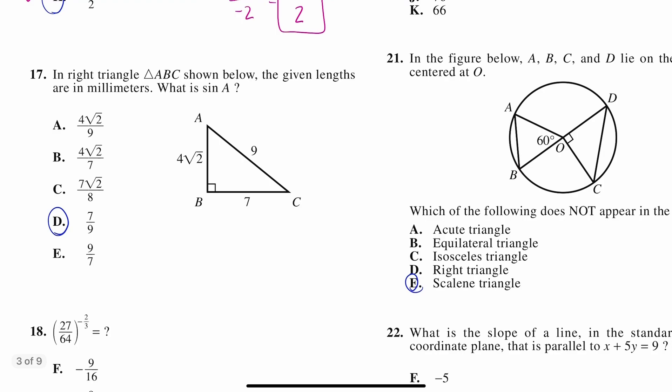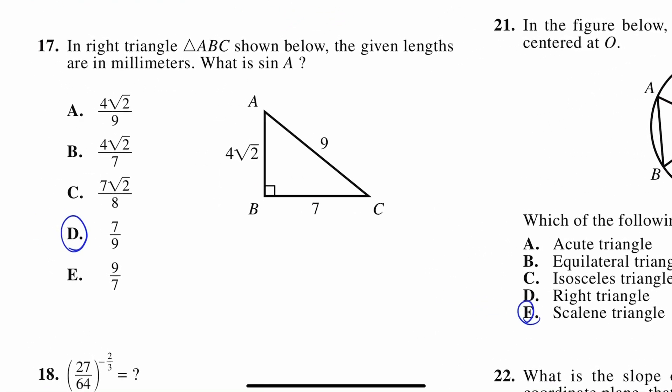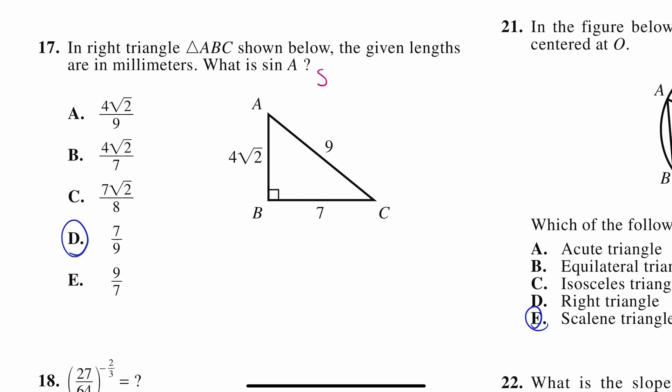Number 17. In the right triangle ABC shown below, the given lengths are in millimeters. What is the sine of A? So you probably learned something called SOHCAHTOA in algebra 2. It's like a trig lesson. S stands for sine, which is the opposite over the hypotenuse. So it wants to know what the sine of A is. So here's angle A. So I'm going to go right. Sine of A equals, so we want the length opposite of the angle, which is directly across, 7 over the hypotenuse. The hypotenuse is always across from this right angle. 9. So the sine of A is 7 over 9, which is letter D.